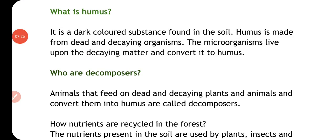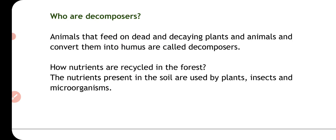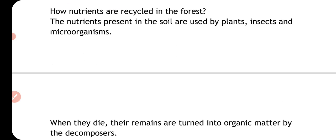Now I'll talk about what is humus. It is a dark colored substance found in the soil. Humus is made from dead and decaying organisms. Microorganisms live upon the decaying matter and convert it into humus. These organisms are called decomposers, and they help recycle nutrients in the forest.